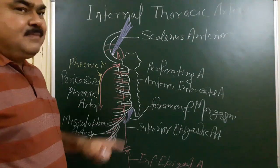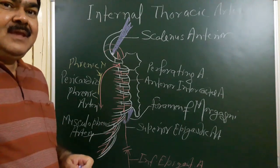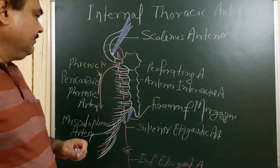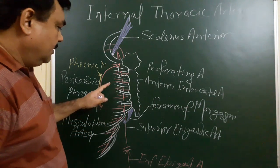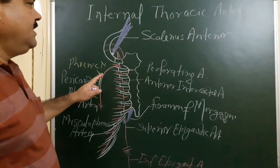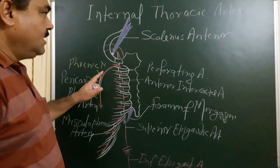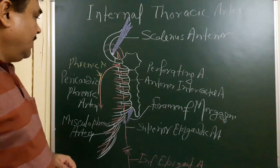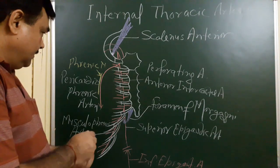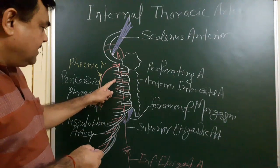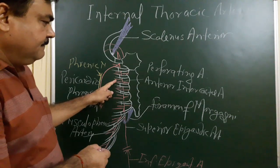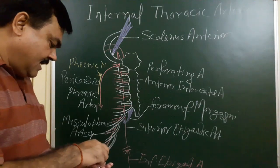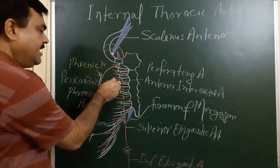These arteries give supply to the breast and muscles of the thoracic wall. So these are the branches of the internal thoracic artery, or internal mammary artery. These branches here are the anterior intercostal arteries.